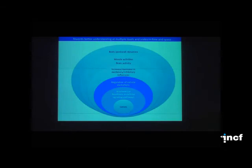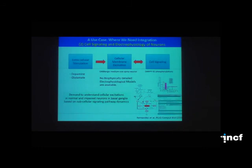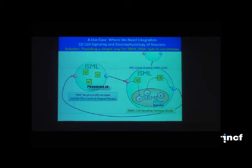Now let me talk about the cellular level and subcellular molecular levels. For example, given GABAergic medium-sized spiny neuron electrophysiological activity, this sort of neuron may be influenced by cell signaling, for example by phosphorylation. We have also demand to understand cellular excitations in normal and impaired neurons in basal ganglia based on subcellular signal pathway dynamics.